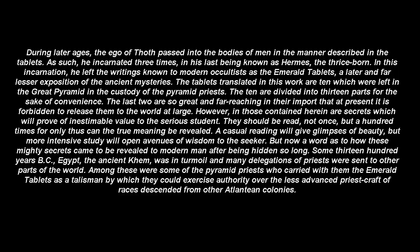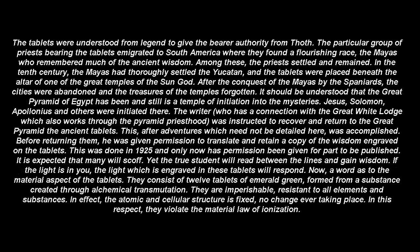Now a word as to how these mighty secrets came to be revealed to modern man after being hidden so long. Some thirteen hundred years BC, Egypt — the ancient Khem — was in turmoil and many delegations of priests were sent to other parts of the world. Among these were some of the pyramid priests who carried with them the Emerald Tablets as a talisman by which they could exercise authority over the less advanced priestcraft of races descended from other Atlantian colonies. The tablets were understood from legend to give the bearer authority from Teth. The particular group of priests bearing the tablets emigrated to South America, where they found a flourishing race, the Marius, who remembered much of the ancient wisdom. Among these the priests settled and remained. In the tenth century, the Marius had thoroughly settled the Yucatan, and the tablets were placed beneath the altar of one of the great temples of the sun god. After the conquest of the Marius by the Spaniards, the cities were abandoned and the treasures of the temples forgotten.